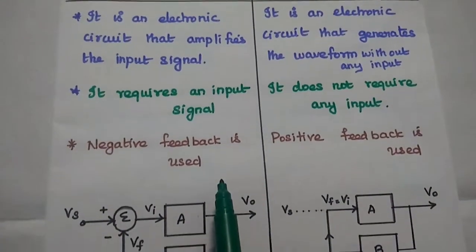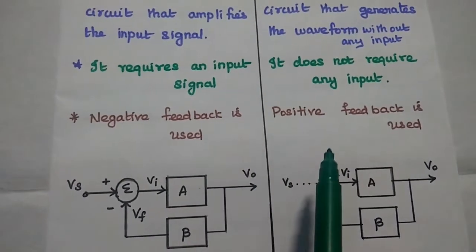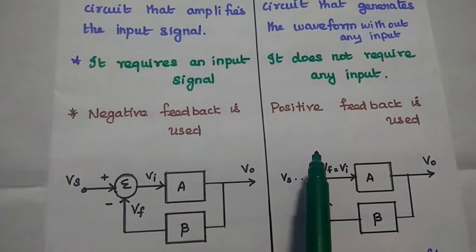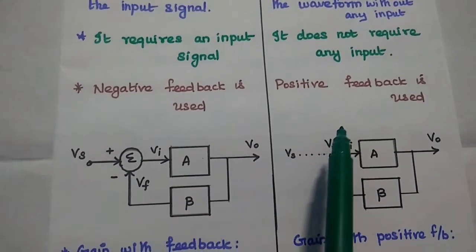In an amplifier, negative feedback is used. In an oscillator, positive feedback is used.